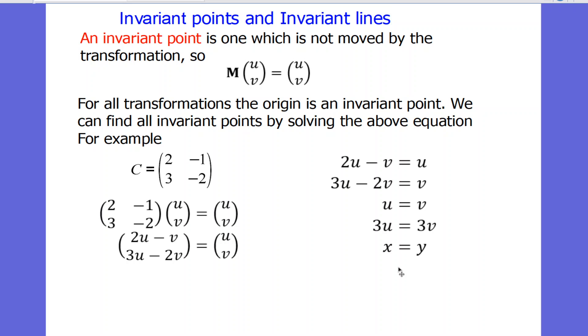If these two equations were different, the answer would be there's no invariant point because it has to satisfy both equations. And if they're not basically the same equation as they are here, there's no invariant points apart from the origin. We've seen that y equals x is a line of invariant points.